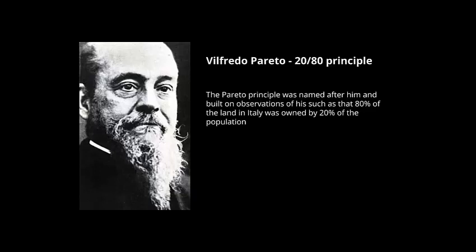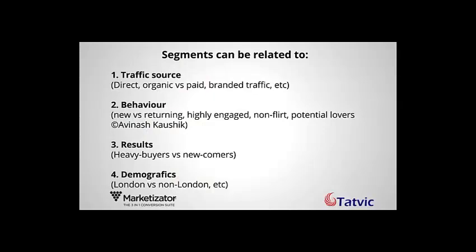Segmentation can be related to traffic source, behavior, results, and demographics. What you can do is apply Pareto's law to see which 20% of your traffic sources are generating 80% of your conversions. Based on behavior, as Avinash Kaushik mentioned, you can identify segments like non-flirts, potential lovers, or the highly engaged, or new versus returning. Your job in segmentation is to find the bullseye — which traffic sources are converting better, how converters are behaving, what heavy buyers are doing, and from which demographic zones the most important conversions come.